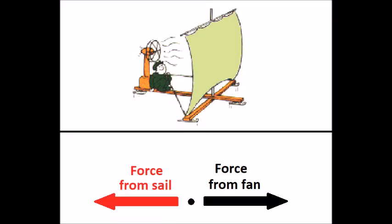When you combine both forces, you get something like this. The fan is blowing the boat to the left. The sail is blowing the boat to the right. The forces cancel out and the boat doesn't move.